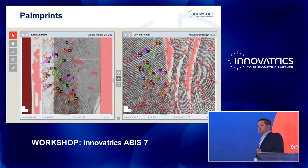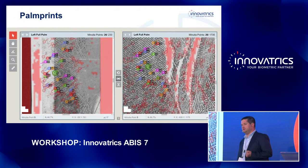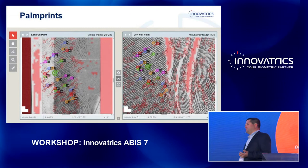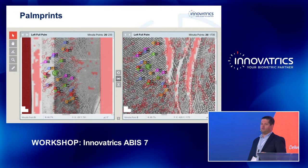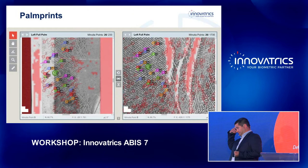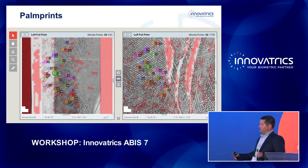The next feature that was mentioned in the earlier presentation is palm prints. Why do we need palm prints? Criminals at a crime scene usually don't cooperate — they accidentally leave fingerprints, and sometimes, very often, there are no fingerprints at all — just palm prints. We can use them to identify a person the same way we use fingerprints.